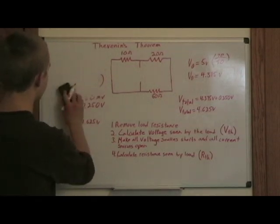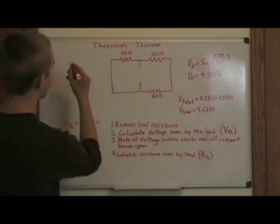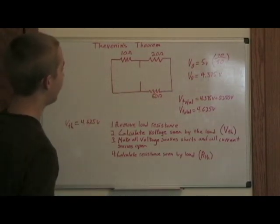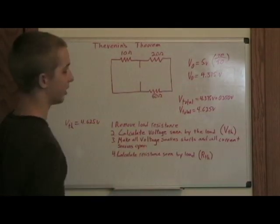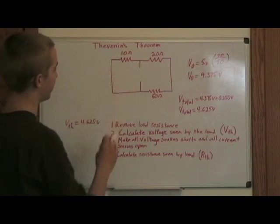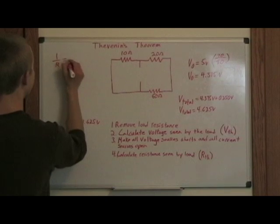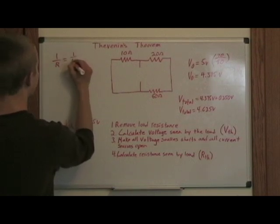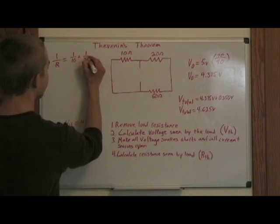So let's go ahead and erase some of this. And then when those two things are shorted out, it turns out that these two resistors we added together are 70 ohms, and then it's in parallel with this 10 ohm resistor. So then it's just 1 over R equals 1 over 10 plus 1 over 70.